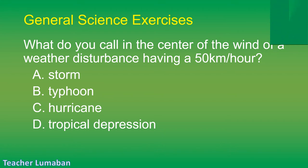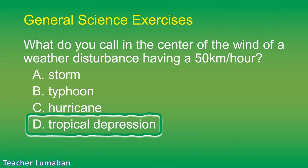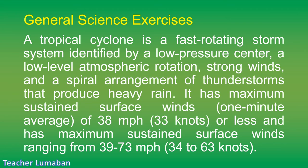A tropical cyclone is a fast-rotating storm system identified by a low-pressure center, low-level atmospheric rotation, strong winds, and a spiral arrangement of thunderstorms that produce heavy rain. It has maximum sustained surface winds (one-minute average) of 38 mph (33 knots) or less, ranging from 39 to 73 mph (34 to 63 knots) for a tropical storm.